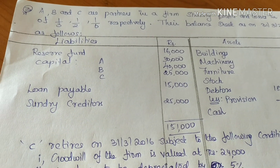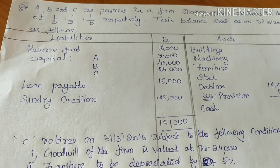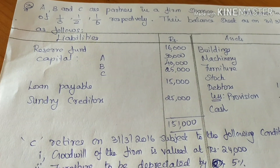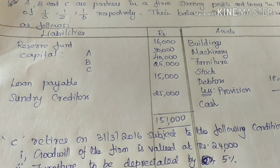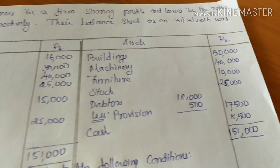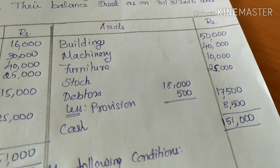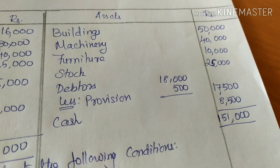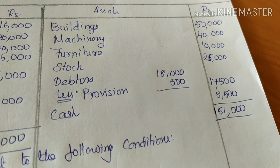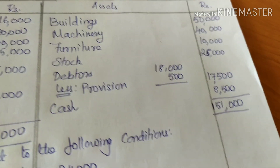On the liability side: reserve fund, capital accounts of A, B, and C, loan payable, and sundry creditors. On the asset side: building, machinery, furniture, stock, debtors less provision for doubtful debts, and cash.